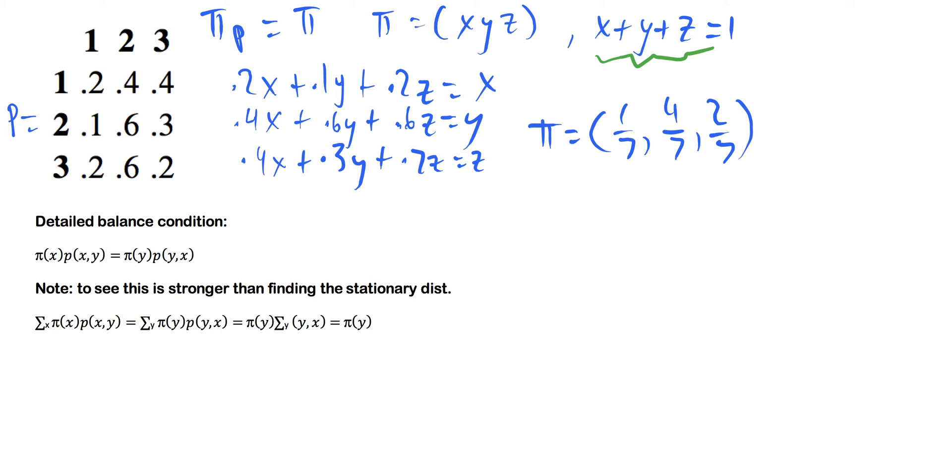So all we're really trying to say here is that the likelihood of us going from one state to the next is going to be the same as going from that state back to the previous state in the long run. So it isn't really a matter of deciding what the likelihood of it is or we don't have to do anything in reverse. We just have to simply check that this matrix fits this detailed balance condition. And all you really need is your probability matrix and the long-run distribution, which we already have with our vector π.